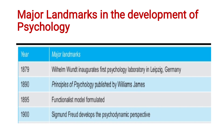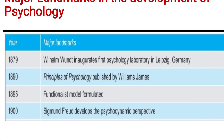Moving on to major landmarks in the development of psychology: In 1879, Wilhelm Wundt inaugurated the first psychological laboratory in Leipzig, Germany — we have already discussed this. In 1890, Principles of Psychology was published by William James, who stated that psychology is the study of mind. In 1895, the functionalist model was formulated — we discussed functionalism in the schools of psychology.